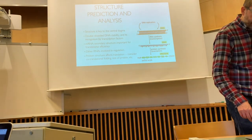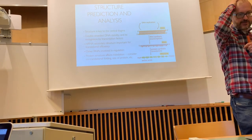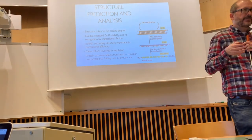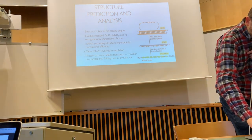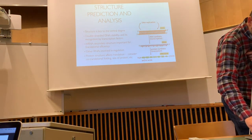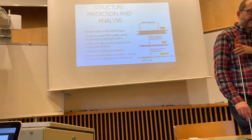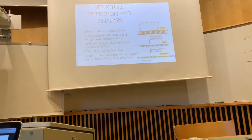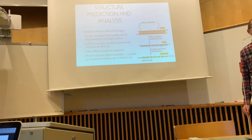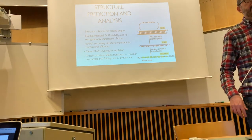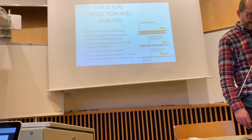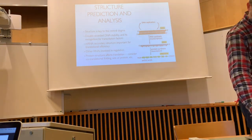mRNA secondary structure is really important for translational efficiency. There are all sorts of things that happen when mRNA interacts with the ribosome. And of course, there are lots of RNAs that are involved in regulation. The structure of the protein affects translation — for instance, there are things that happen co-translationally, like part of the secondary structure might start folding inside the ribosome before it's even cleared the exit tunnel, and that can affect how the protein folds.